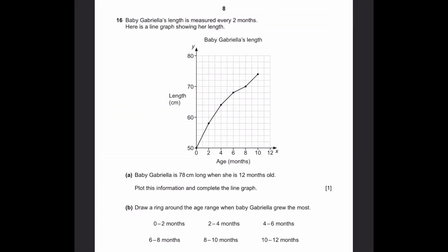Question 16. Baby Gabriela's length is measured every two months. Here's a line graph showing her length. Part A: She's 78cm long when she's 12 months old. Plot this information and complete the line graph.